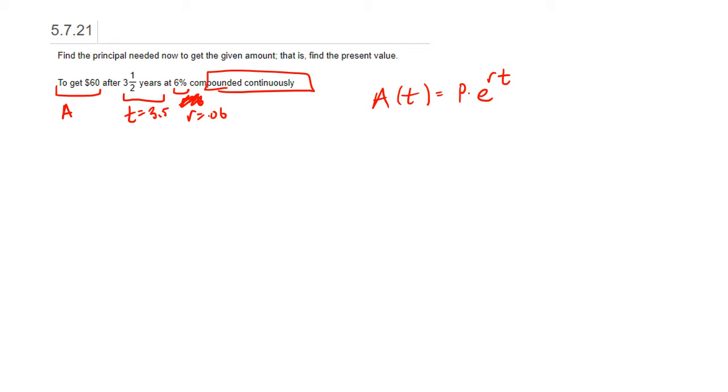Okay, but now we know the principal... sorry, the principal is what we do not know. What we do know, however, is the amount A. So we set up $60 is equal to the unknown principal times E to the 0.06 times 3.5. And note that E to the 0.06 times 3.5 is just going to be some number. So I can just divide by it. So we get P is equal to 60 divided by E to the 0.06 times 3.5, whatever that is. And again, I'm just going to punch that into a calculator. 60 divided by E to the 0.06 times 3.5. And we've got 48.64.